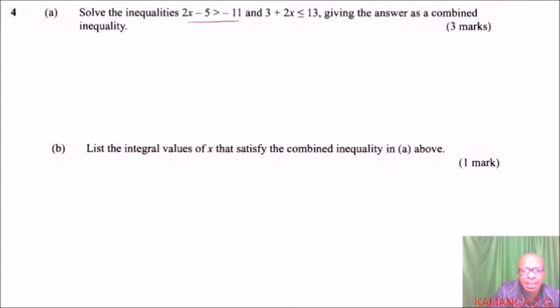We can say this is 2x minus 5 is greater than minus 11. So, we can take minus 5 to the other side. Once it crosses the equal sign, it will be positive. So, you have 2x. Then, minus 11 plus 5, that means you end up with minus 6. Divide both sides by 2. You have x is greater than minus 3.